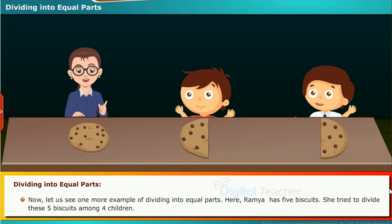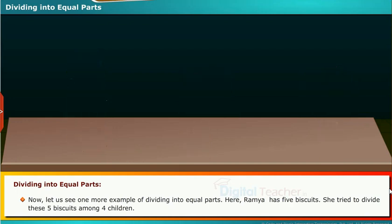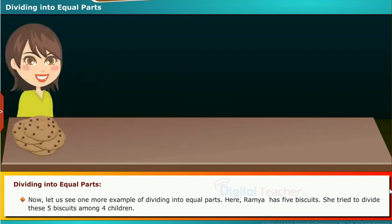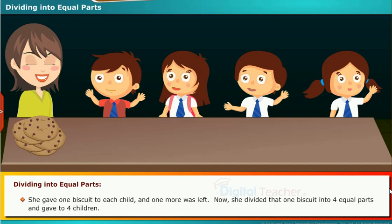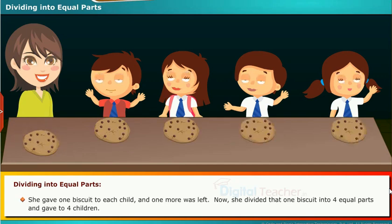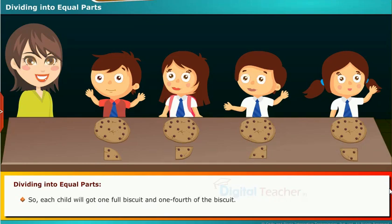Now let us see one more example of dividing into equal parts. Ramya has 5 biscuits. She tried to divide these 5 biscuits among 4 children. She gave one biscuit to each child and one more was left. She divided that one biscuit into four equal parts and gave them to the four children. So each child got one full biscuit and one fourth of the biscuit, that is 5 by 4.